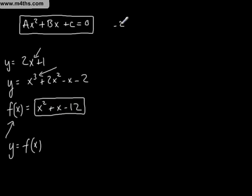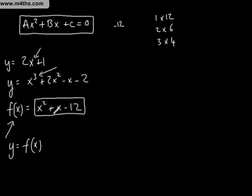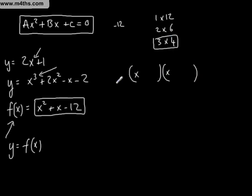We've got to make minus 12. What two numbers can multiply to give negative 12? 1 × 12, 2 × 6, and 3 × 4. One's going to have to be positive and one's going to be negative for us to have a negative product. Hopefully you've spotted that the correct pair is: we set up two brackets, put an x in the front of both, and the two numbers that multiply to give negative 12 and add to give 1 are going to be +4 and -3.